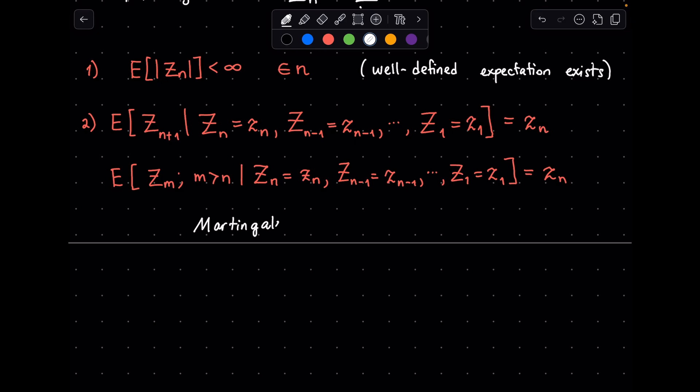At first glance, it might seem like this is just a Markov process. Remember that in Markov process, the next step's value does not depend on the history, but only on the current value. But I should warn you that in general, a Martingale process is not the same thing as a Markov process. A process might be both Markov and Martingale, but one does not imply the other in general.